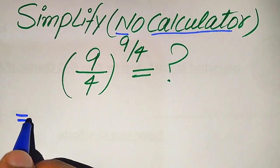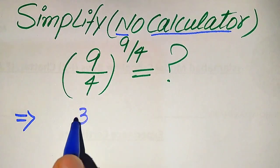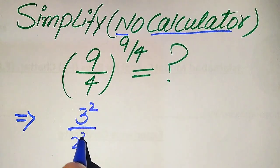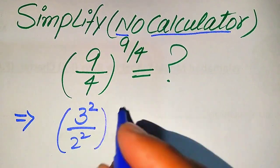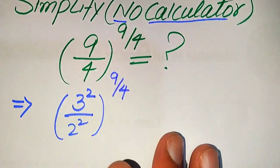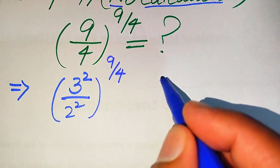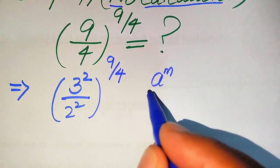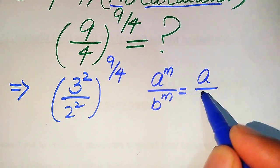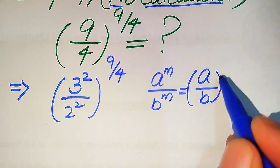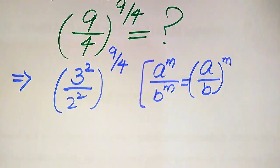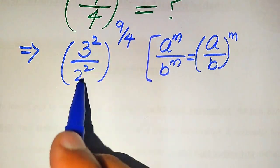First, we write 9 as 3 squared and we write 4 as 2 squared, and its exponent is 9 divided by 4. After that, we use the exponential law: if we have a to the power of m divided by b to the power of m, we write it as a divided by b and its whole power is m. According to this rule, we need to combine the exponents of these two terms.